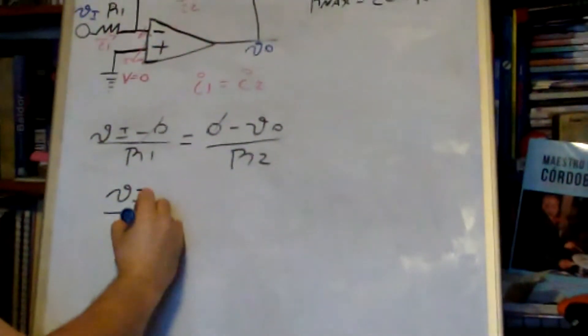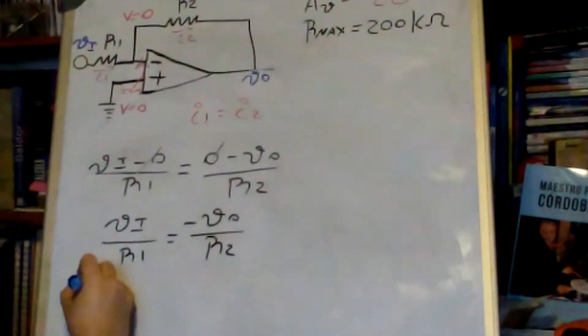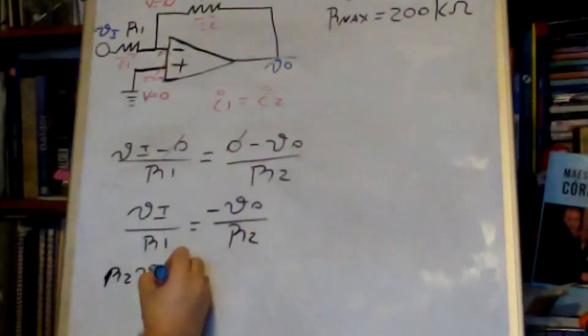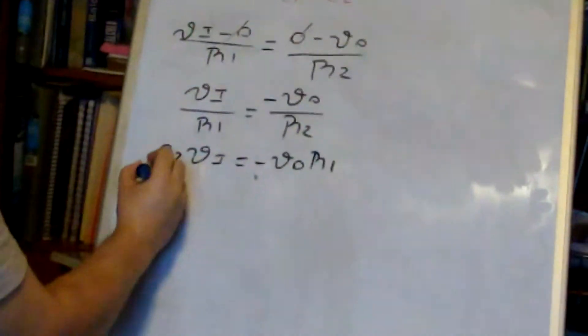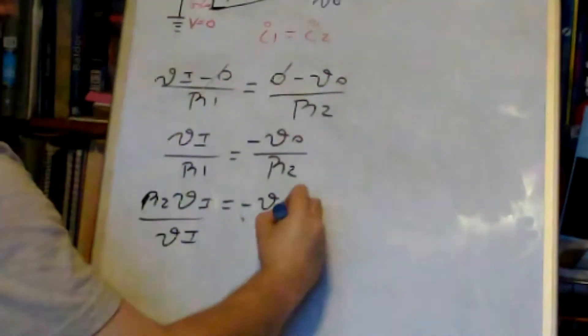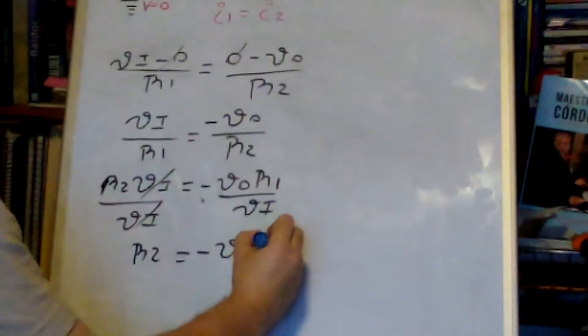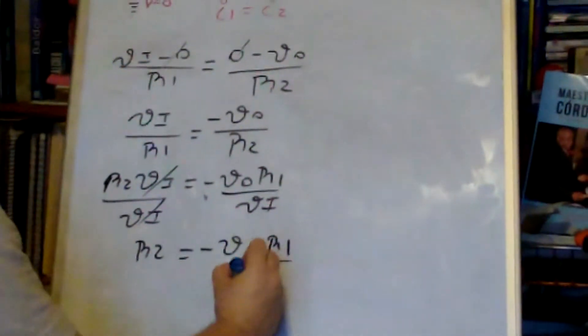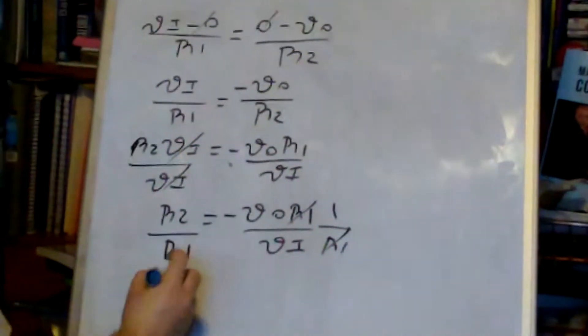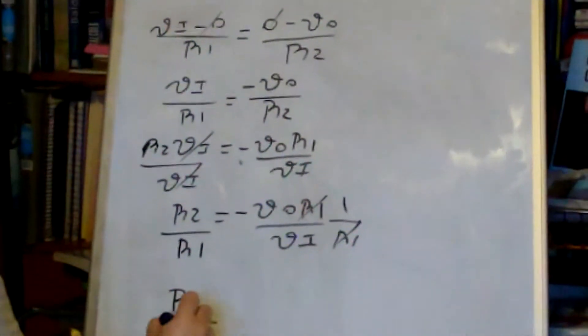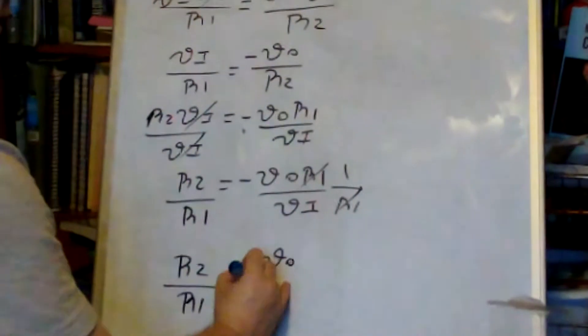I cross multiply: R2 times Vi equals minus Vo times R1. Then I divide by Vi at both sides: R2 is equal to negative Vo times R1 over Vi. Then I divide by R1 at both sides and we get to the equation for the gain: R2 over R1 is equal to negative Vo over Vi.